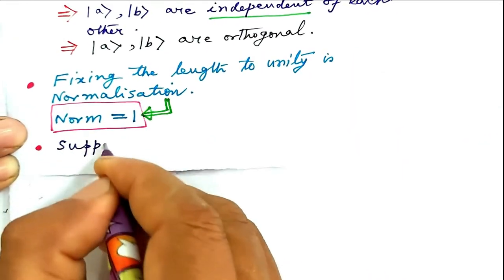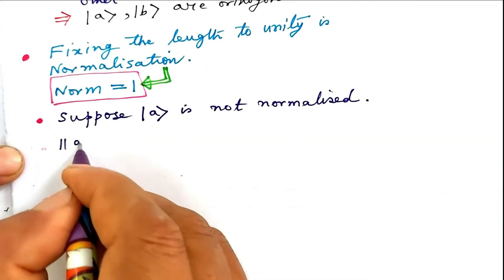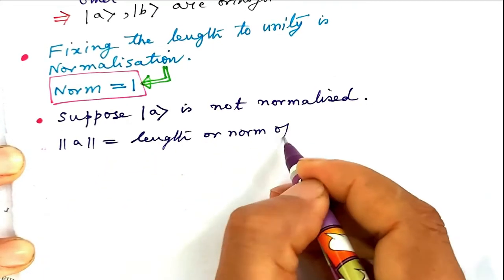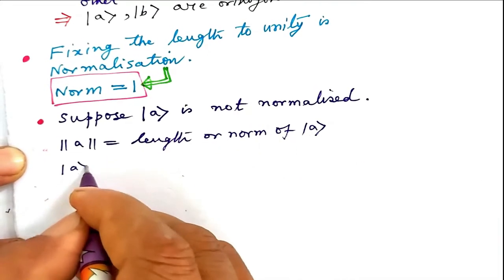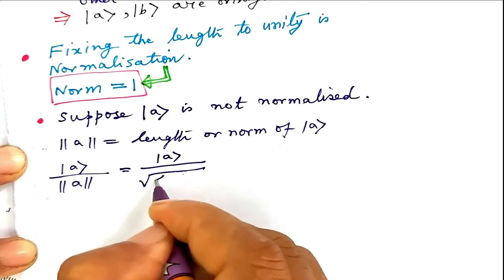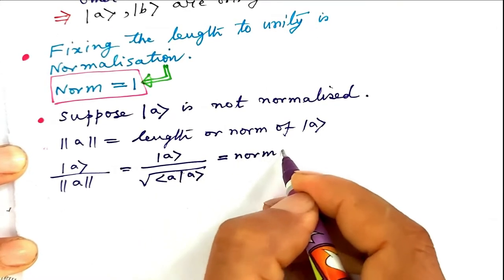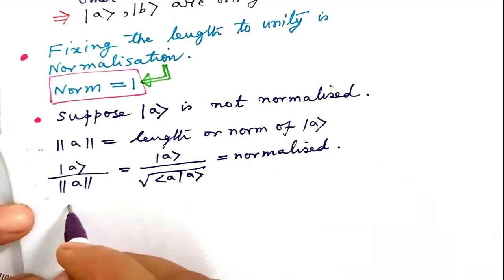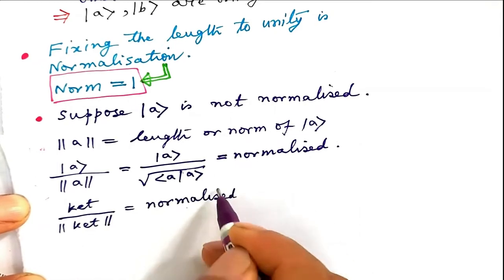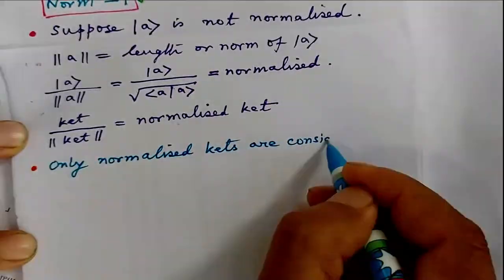Suppose ket-A is not normalized. The double vertical bars on both sides represent the norm of ket-A. Ket-A divided by the norm of ket-A equals ket-A divided by the square root of bra-A ket-A, which represents a normalized ket-A. So ket divided by the norm of ket is a normalized ket. Only normalized kets are considered in quantum mechanics.